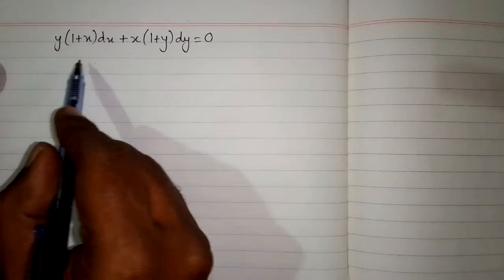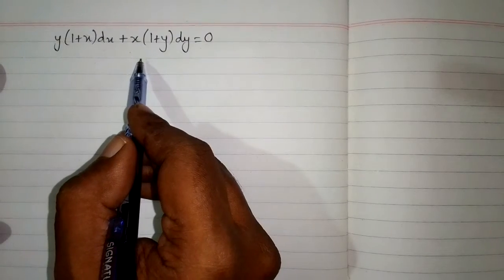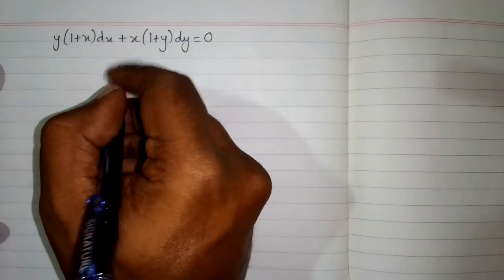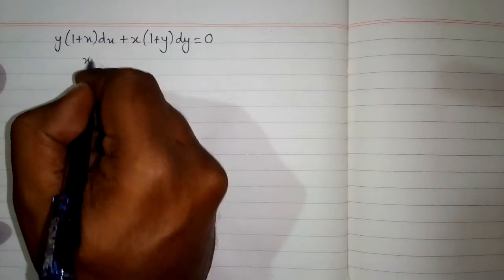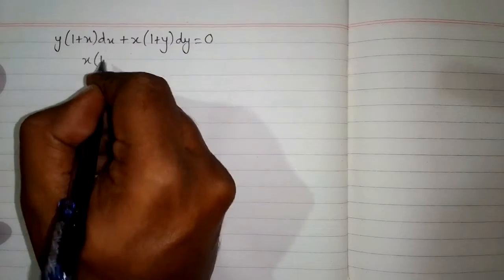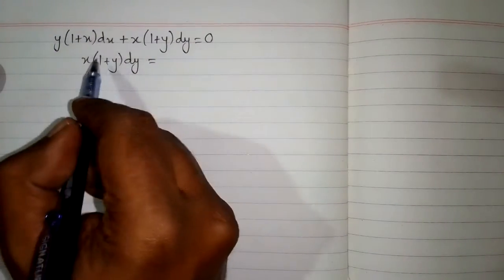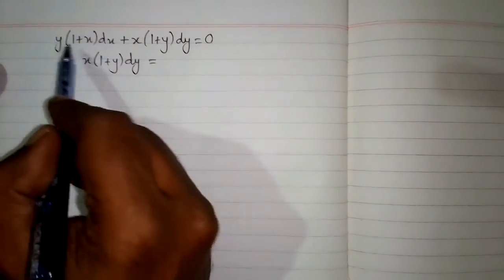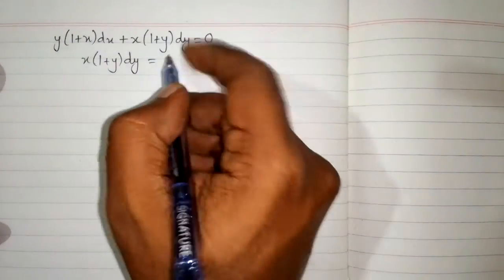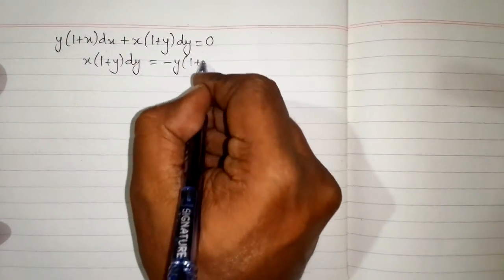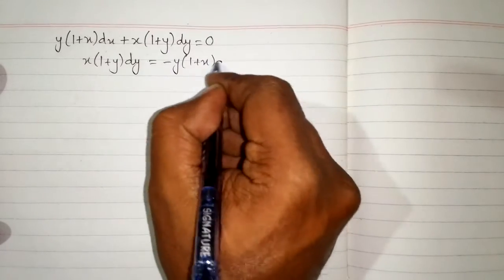This equation can be rearranged into a separable differential equation. First, this can be written as x times (1 plus y) dy is equal to minus y times (1 plus x) dx, by moving the second factor to the other side.